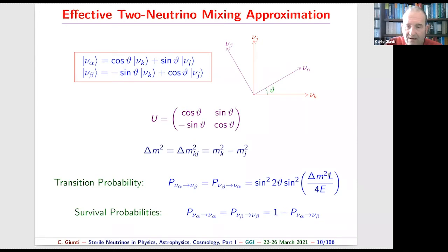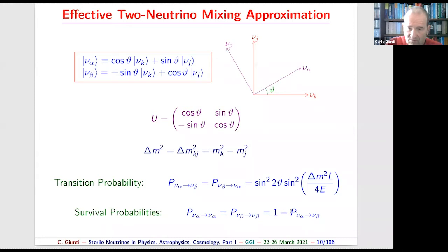The transition probability from one flavor to another shows oscillatory behavior: it is sin²(2θ) times sin²(Δm²L/4E). Here sin²(2θ) is the amplitude and the sine-squared term oscillates with distance. These are called transition probabilities; people also speak of the survival probability — the probability a neutrino is detected with the same flavor as originally produced — which equals one minus the transition probability in two-neutrino mixing.